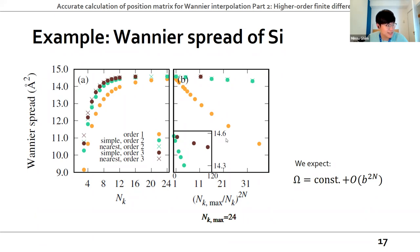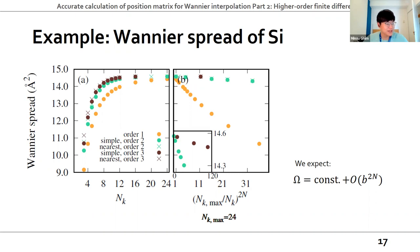The next example is the convergence of Wannier spread of silicon. The same analysis applies because the error behavior of Wannier spread is the same as that of Wannier polarization. The inset in the right figure shows the b-dependence of the error is also correct for the second and third order. The main bottleneck is the non-self-consistent calculation, so reducing NK is the most important matter. The total computational time becomes shorter using higher-order calculation, which is beneficial because we can reduce the number of K-points.